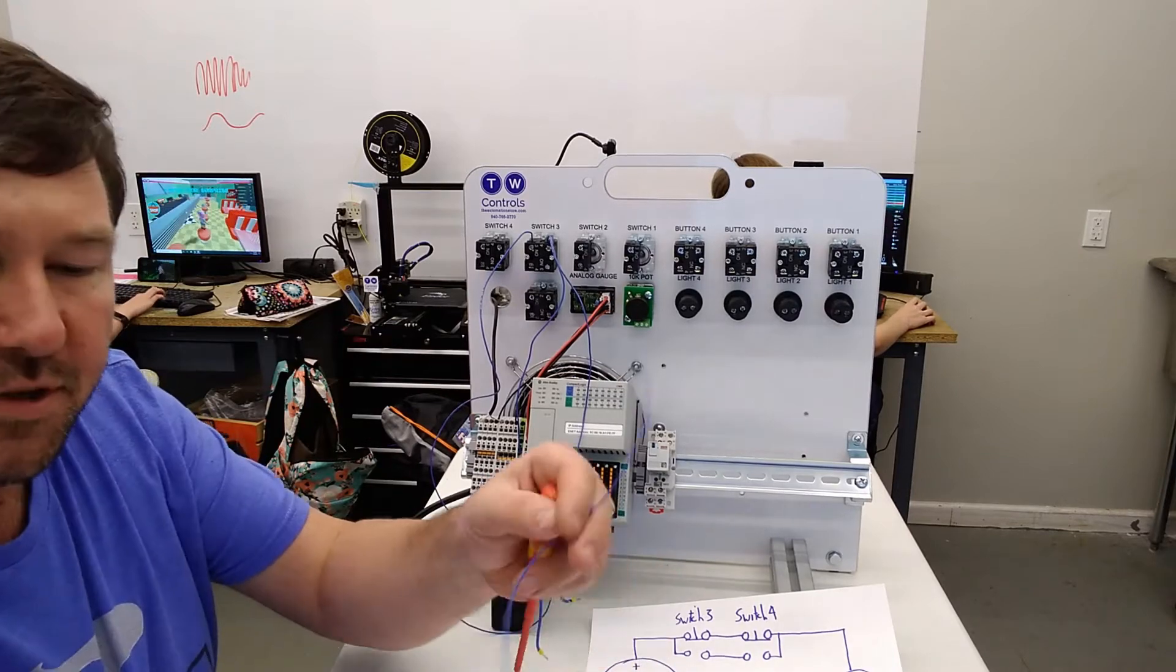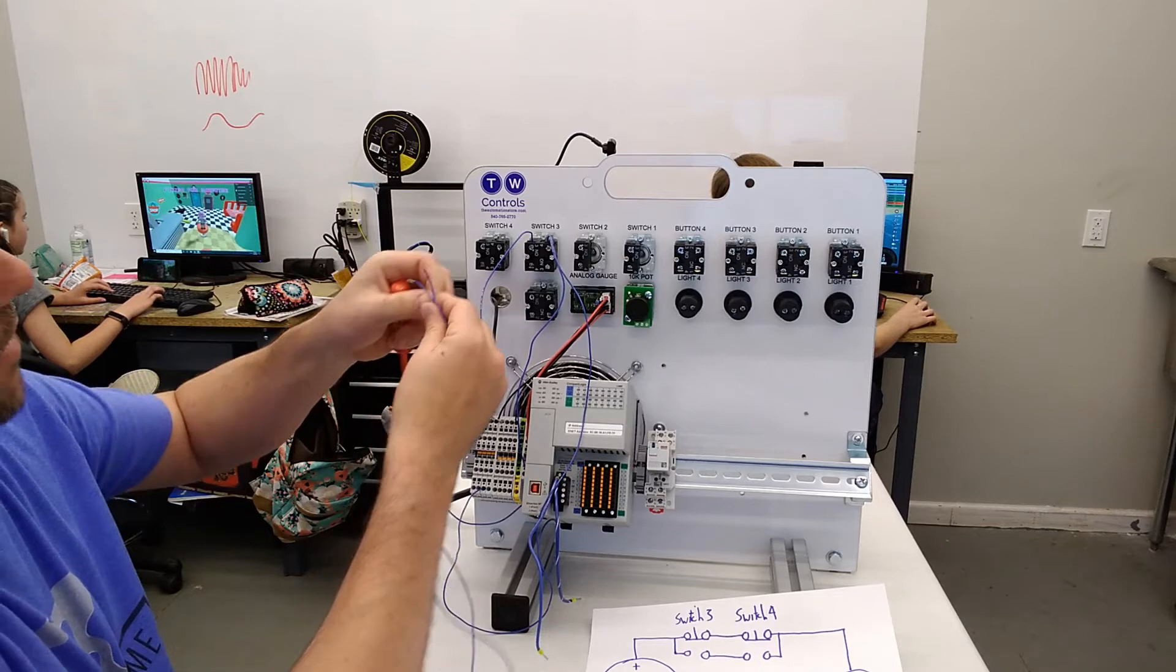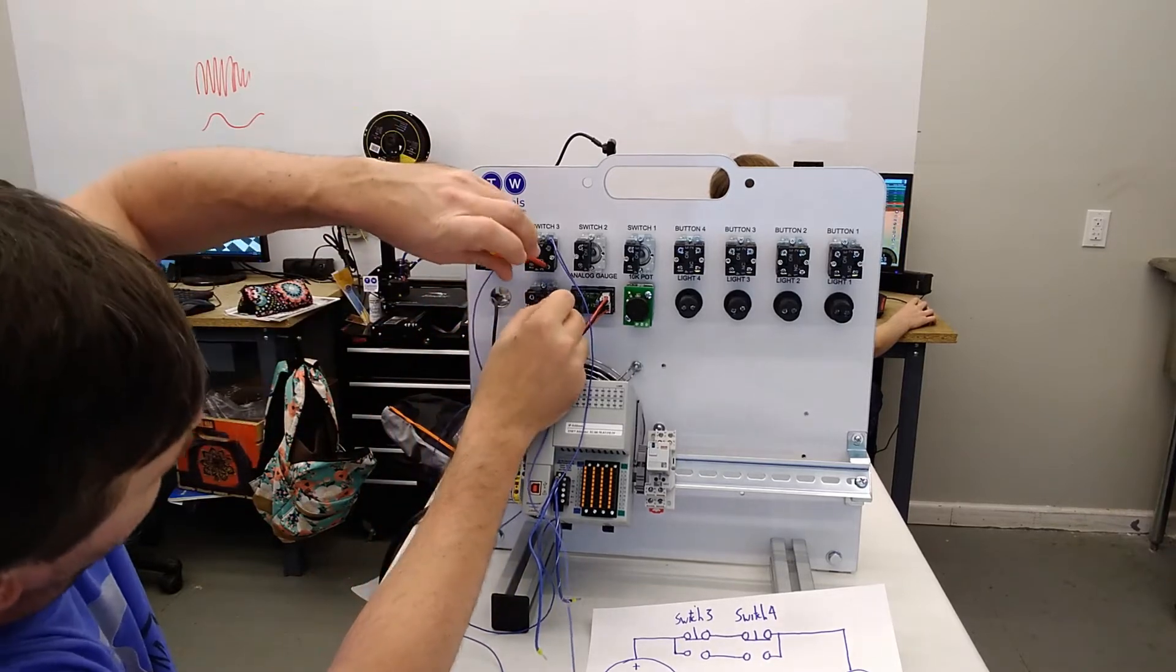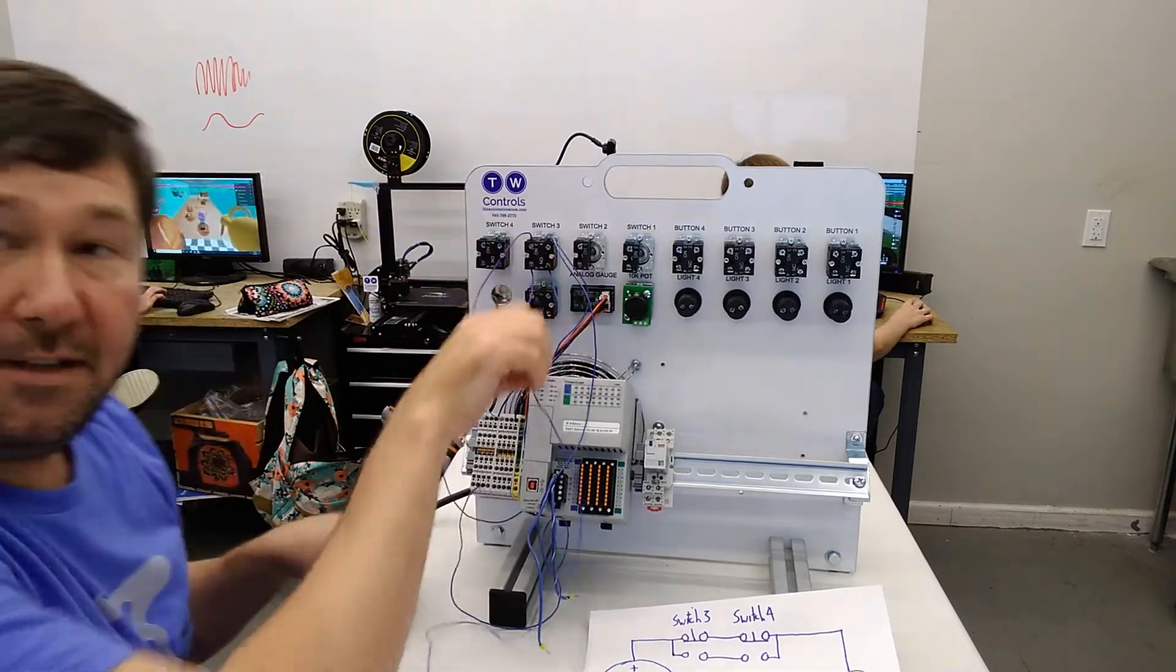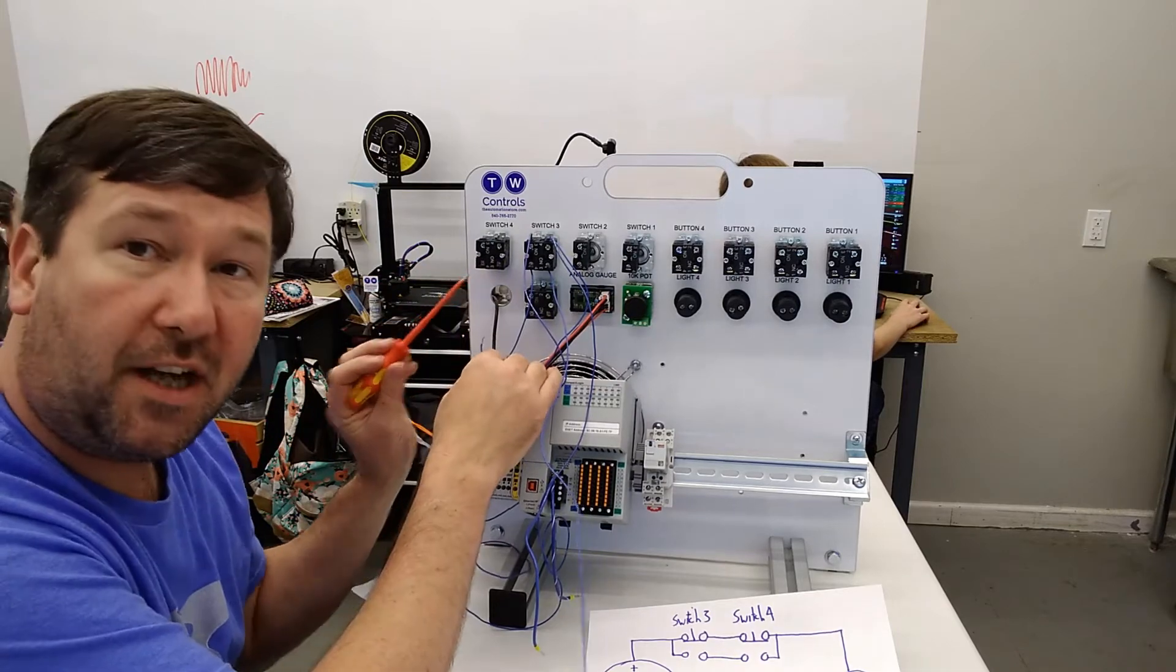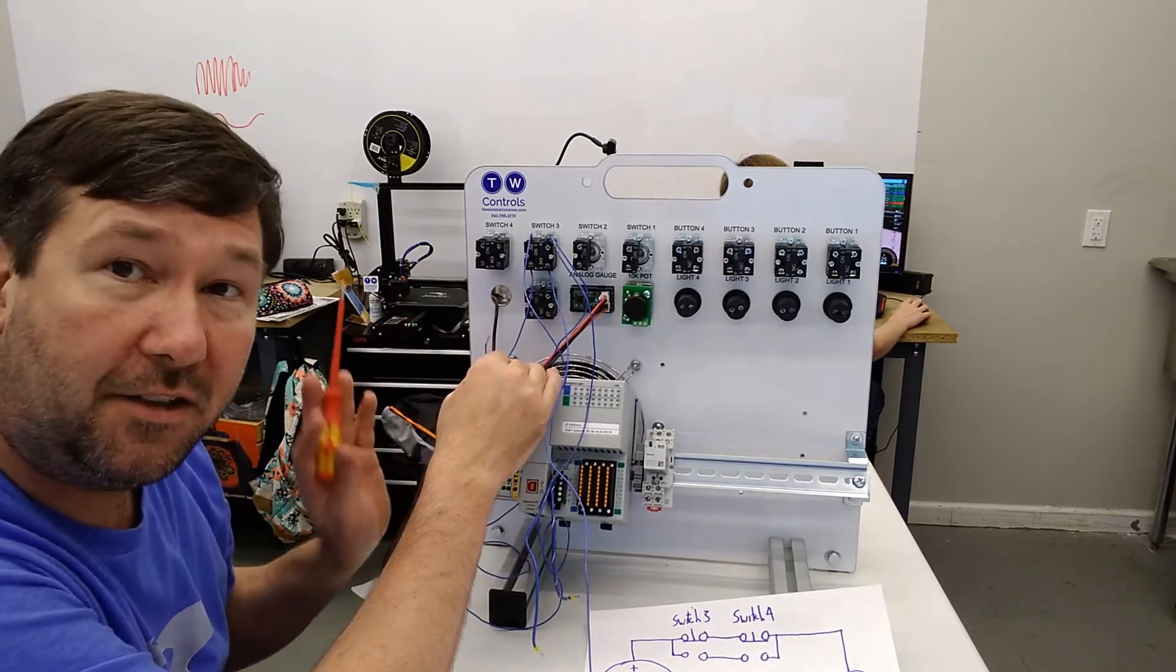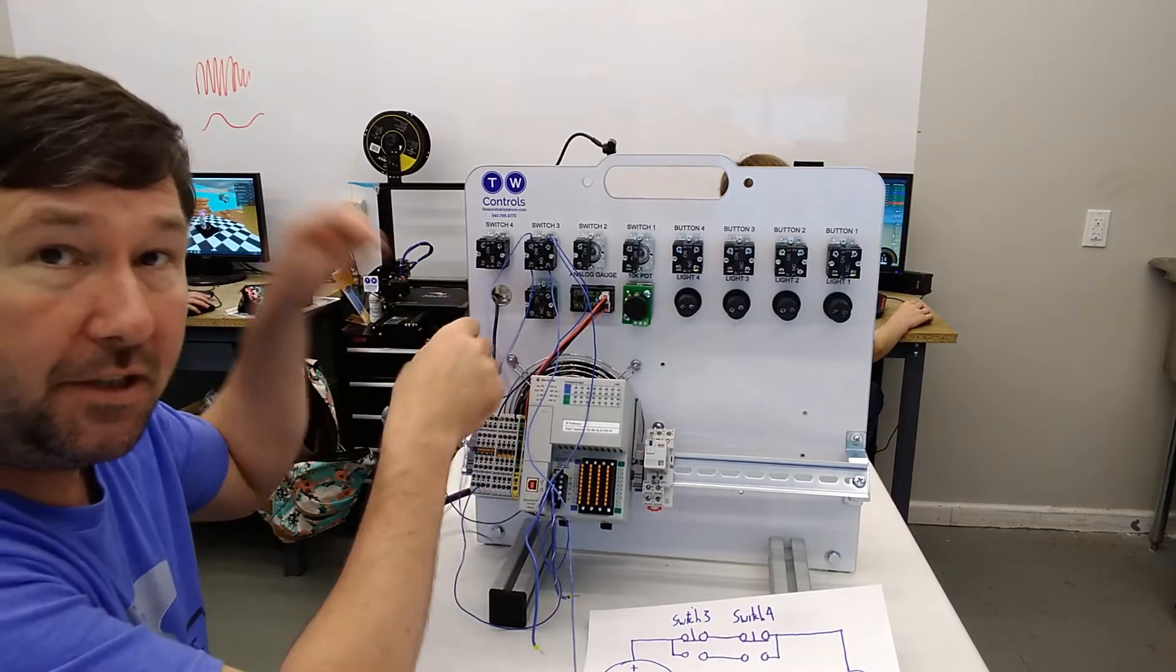Then we're going to grab two more wires and we're going to connect them to the bottom of each contact on switch three. And then we're going to take one of those wires and go to the bottom of one of the contacts on switch four. And I'm not going to tell you which one because it won't matter. It's going to be completely random. So just grab one of the wires, connect it to the bottom of one of the contacts on switch four.